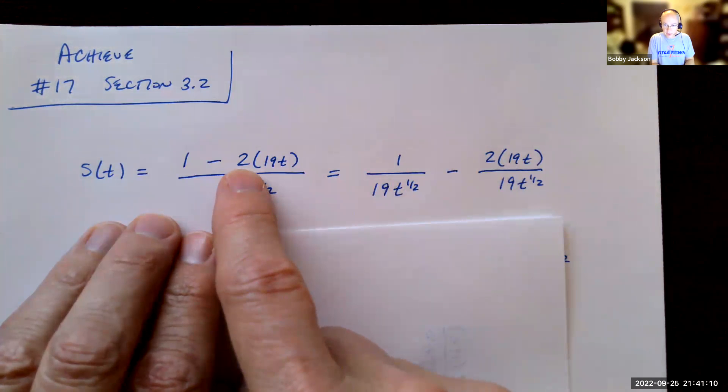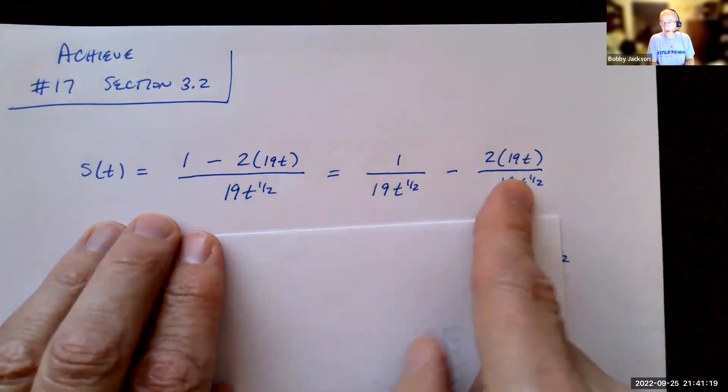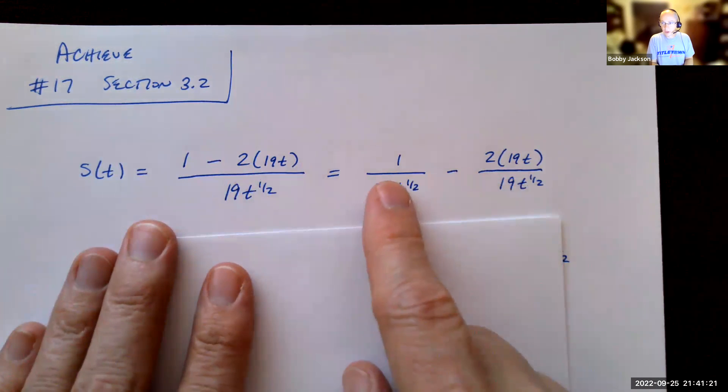Now it's kind of interesting that they write it as 2 times the quantity 19t. Why don't they just write it as 2 times 19, 38t right here? Well, kind of getting you to think about simplifying here a little bit easier. So when we, this part right here, we can simplify.